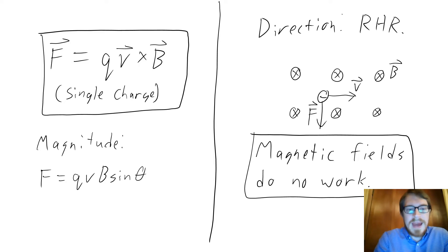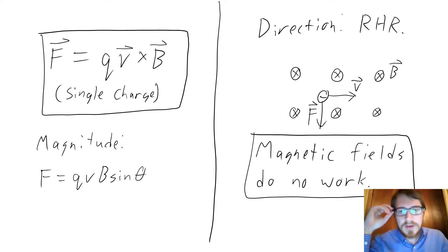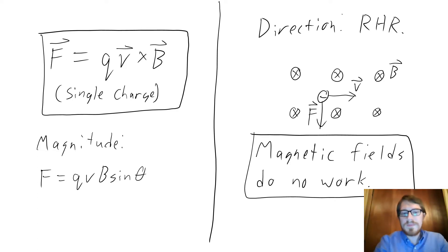The magnitude of this is QVB times the sine of theta, where theta is the angle between the velocity of the charge and the magnetic field. If a charge is moving perpendicular to the magnetic field, it will feel the maximum force. If it's moving parallel, it will feel no force at all, because theta is zero and sine of theta is zero.